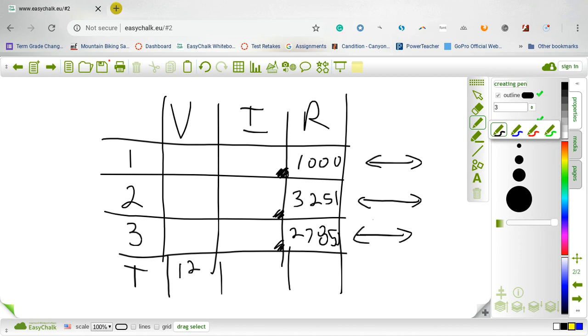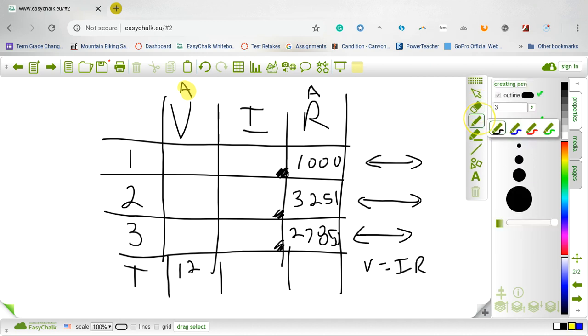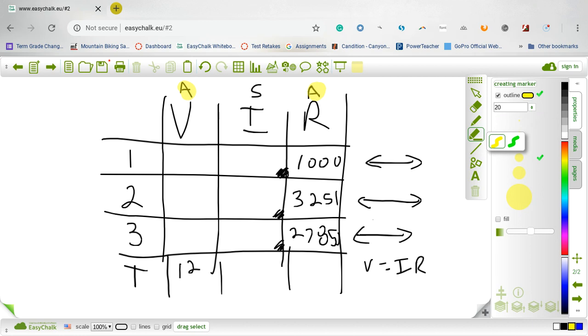To move back and forth in any of these rows, to find a value in one of the other columns, all we do is use Ohm's law: V equals I times R, rearranged for whatever we need. To move up and down in a column, we have an A, S, and A over the top. A means add - for voltage, resistor one plus resistor two plus resistor three adds to the total. S means same - every number in the current column is the same. A for resistance means add - resistor one plus resistor two plus resistor three.